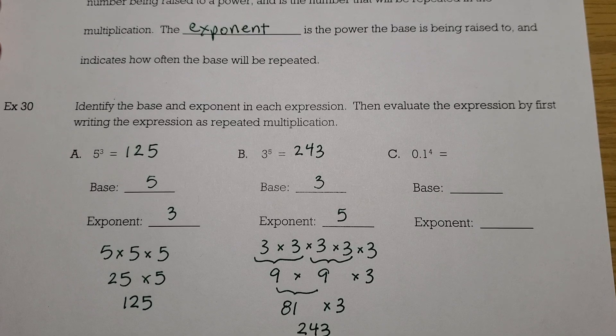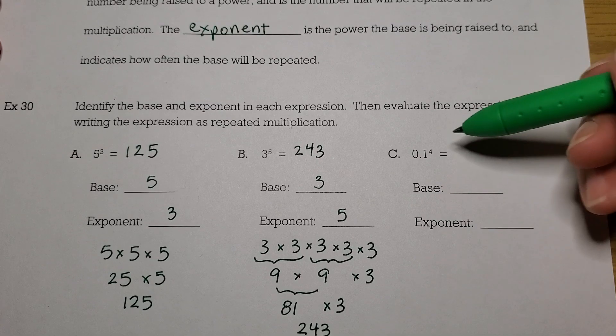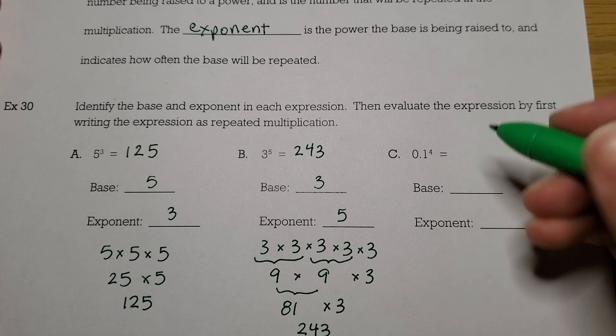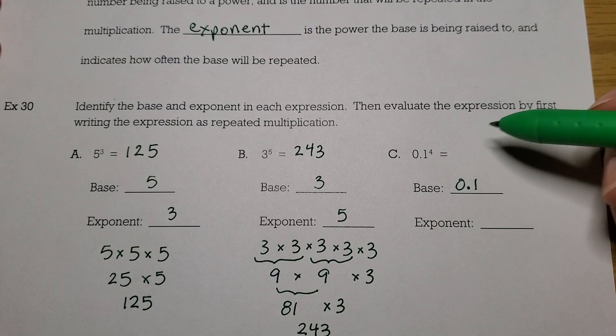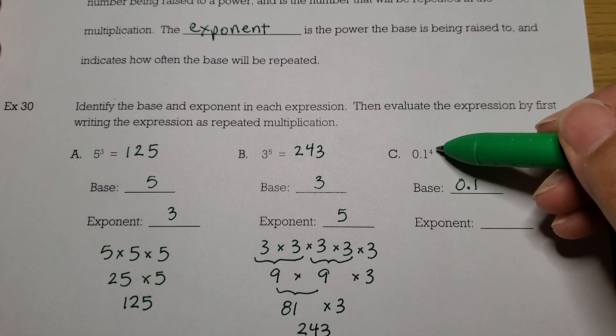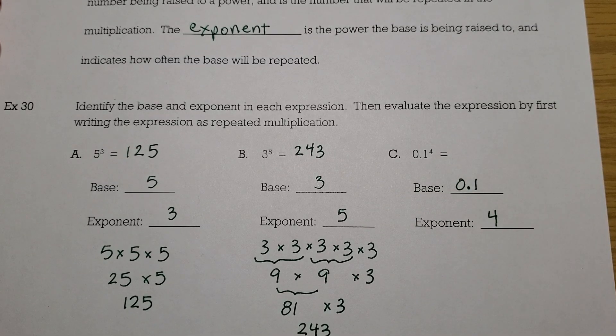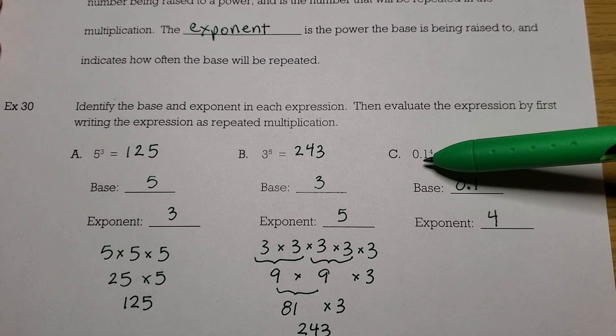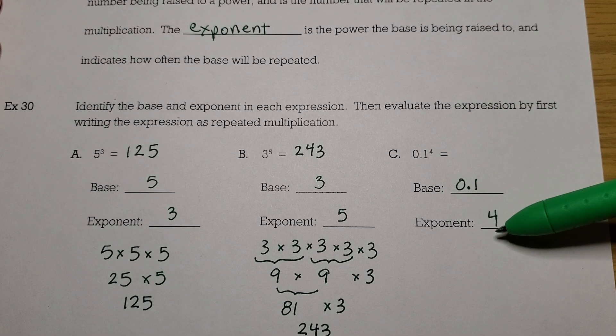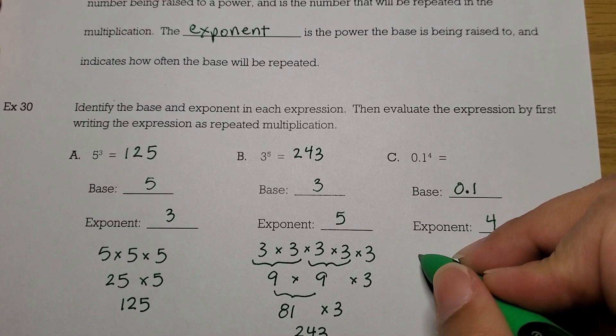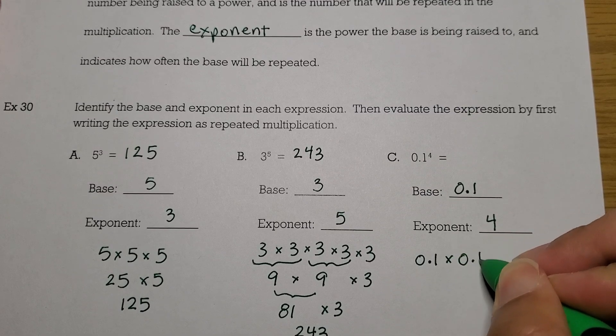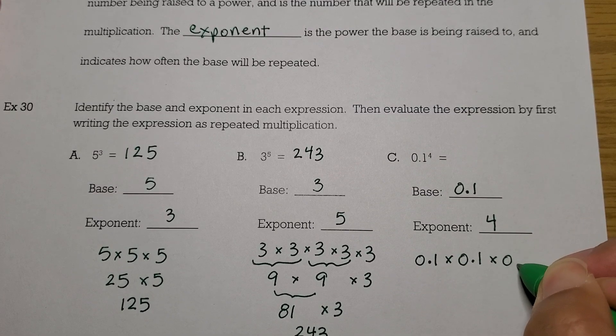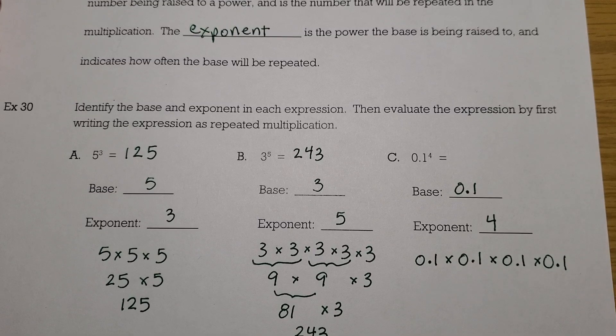All right, let's do this last one that has a decimal base. So the base of this expression is the big number. It's 1 tenth. And the exponent is the tiny written number, the 4. Once again, we are going to take the base and multiply the exponent many of them. So we're going to start out with 0.1, and I need 4 of these. So here's the second one, the third, and the fourth.